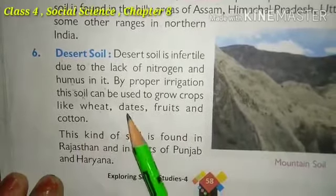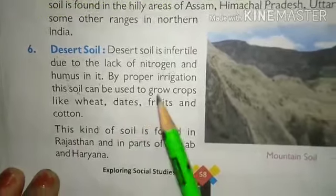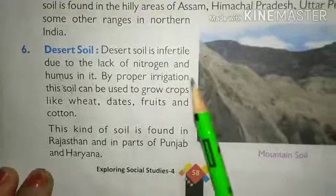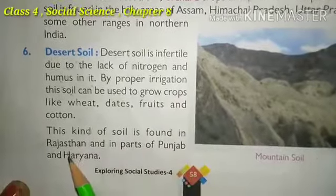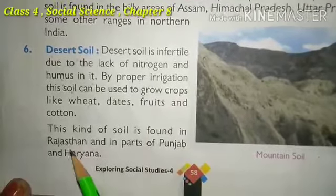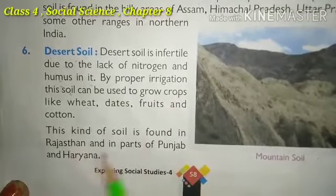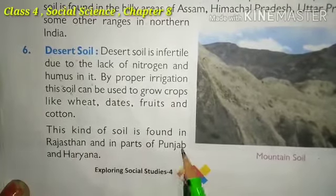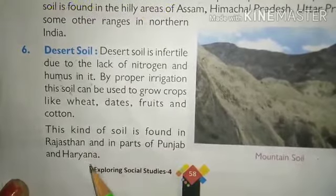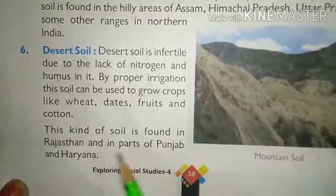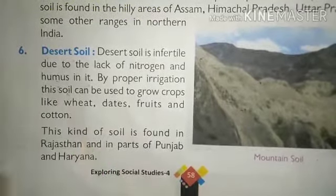With proper irrigation, wheat, dates, fruits, and cotton can be grown in desert soil. This kind of soil is found in Rajasthan, parts of Punjab, and some parts of Haryana.